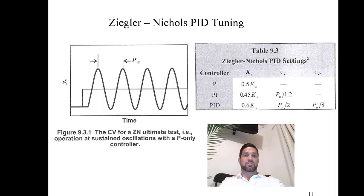Essentially the way it works is you have your controller turned on in P only mode, and you apply step changes in the set point. Upon step changes in the set point, the goal is to increase the value of Kc until you achieve sustained oscillations.